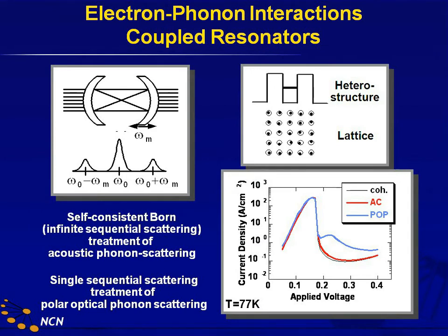Indeed, what you can have here is an IV curve now on a log-log scale, where if you include polar optical phonons — which in gallium arsenide are at 36 millielectron volts — you can basically create an echo in the IV curve. An electron can come in at a high energy, emit a phonon, fall down, and come out at the resonance. So that is a physical mechanism that we can model within NEMO and that is present in real devices.